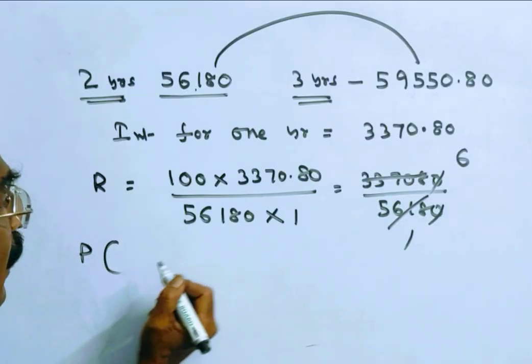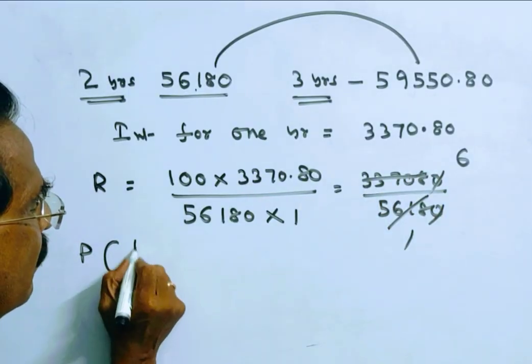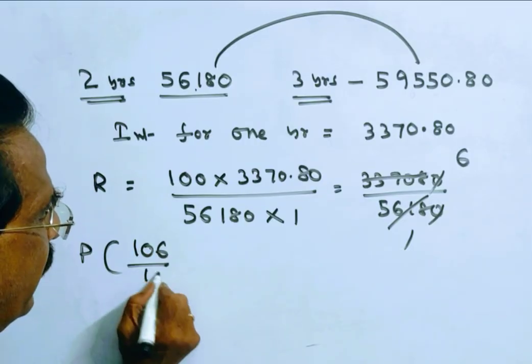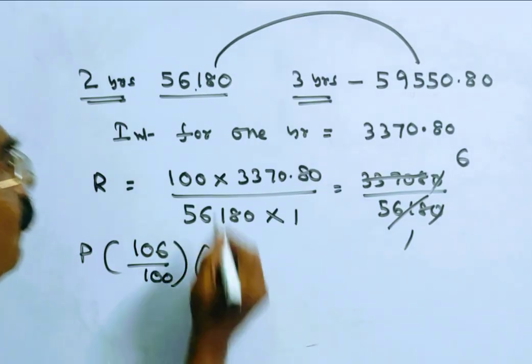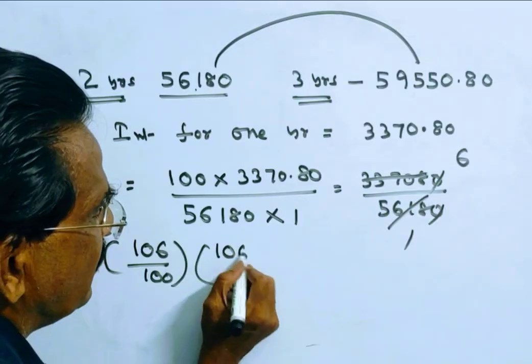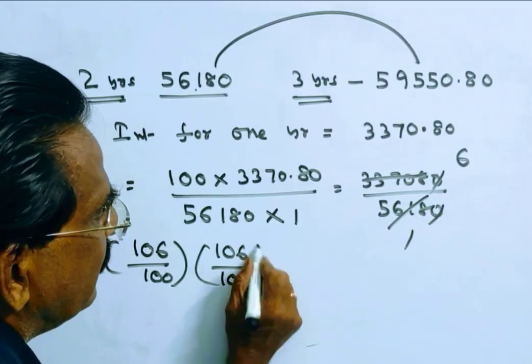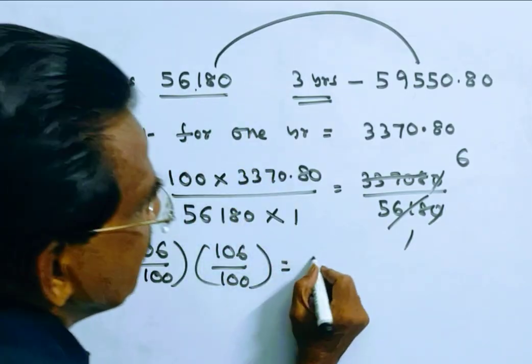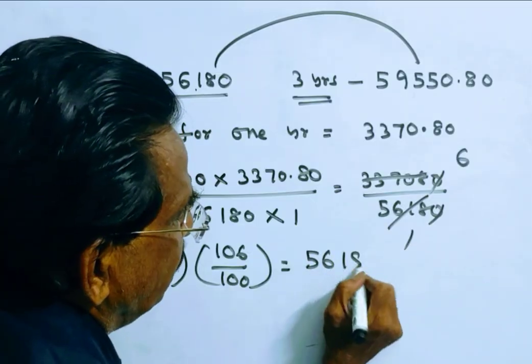So, P into 100 plus R, 106 by 100 into 2nd year. Again, 106 by 100. This is equal to 56,180.